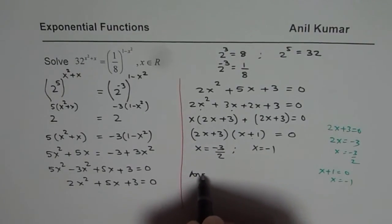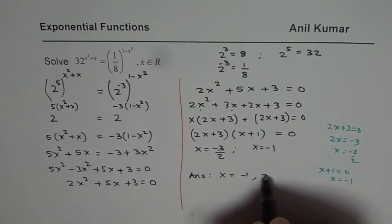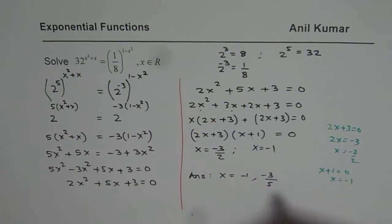Now we can write both these solutions as part of our answer. We say our answer is x equals to minus 1 or minus 1.5 or 3 over 2. So these are the two solutions for the given equation.